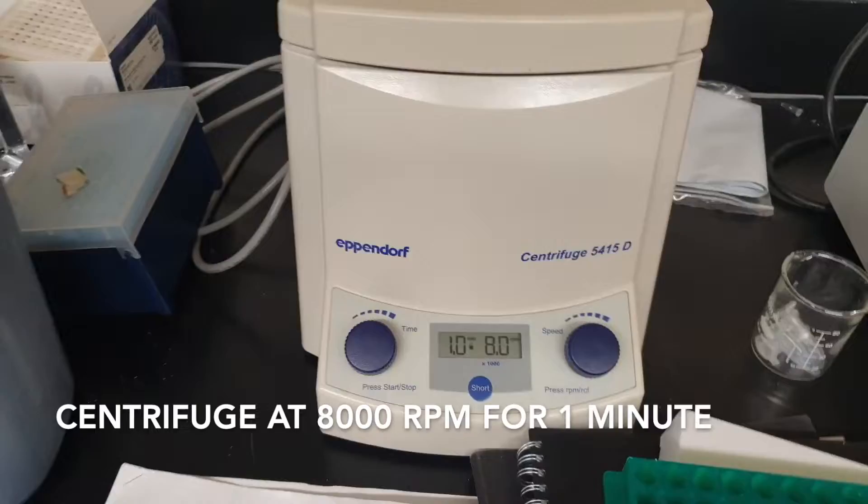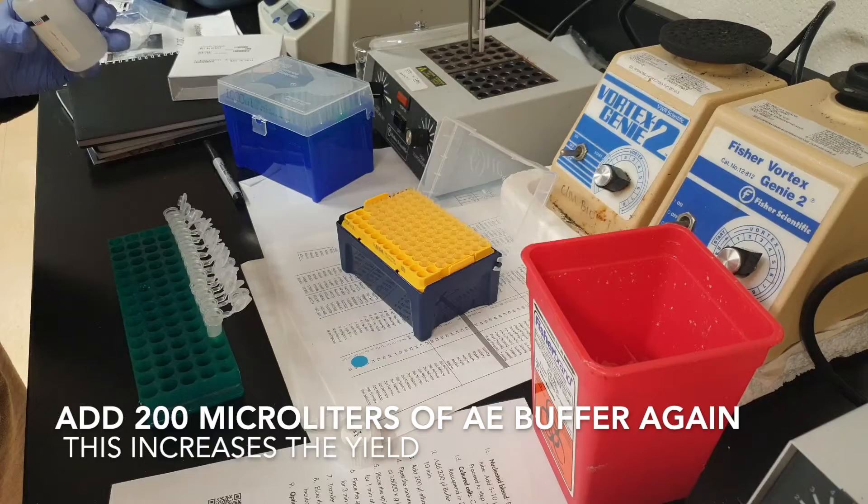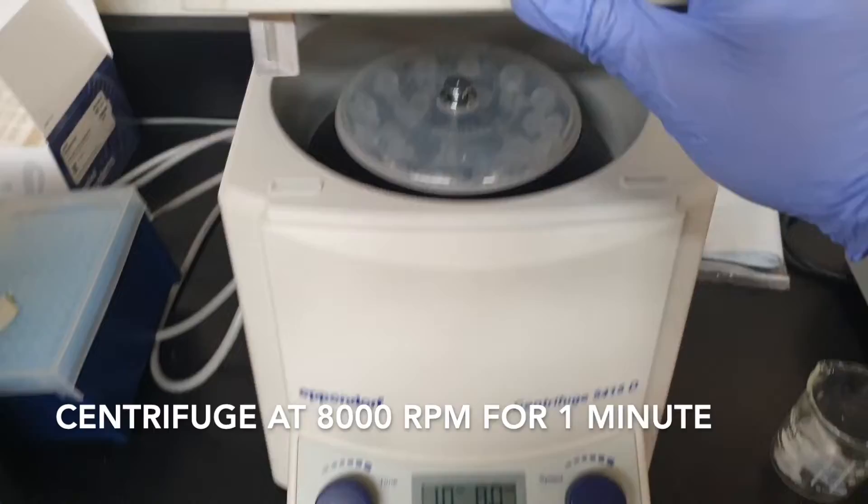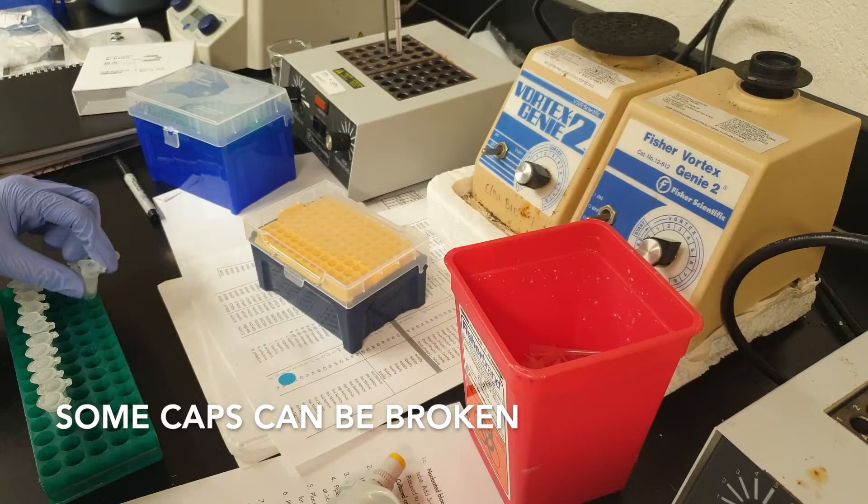You're going to add 200 microliters of buffer AE. Centrifuge at 8000 rpm for one minute. Add another 200 microliters of AE buffer again; this is going to increase the yield.